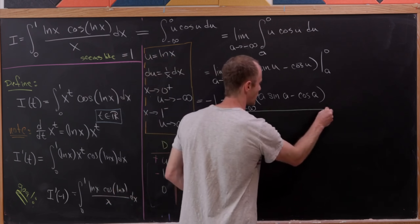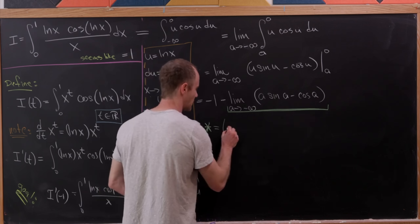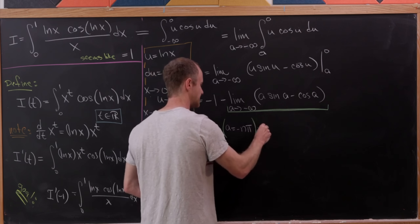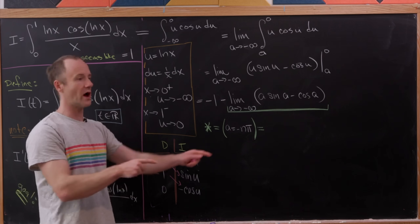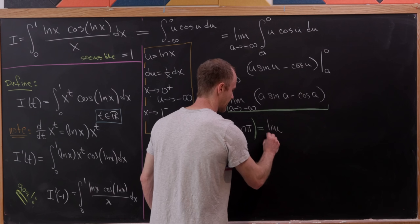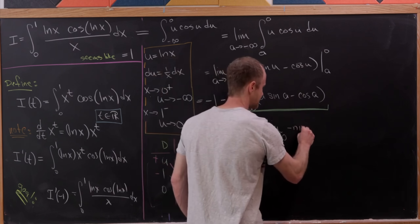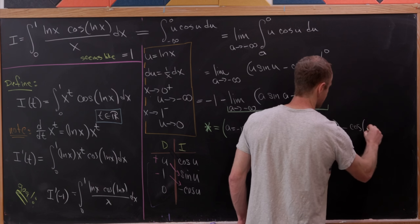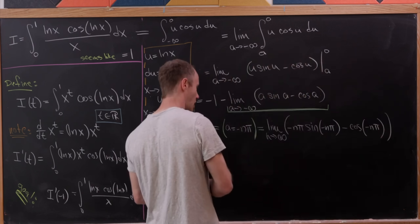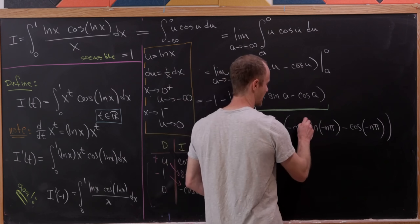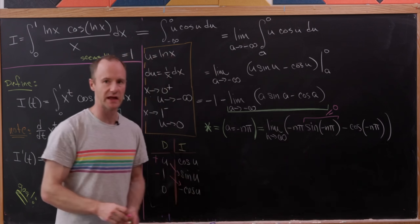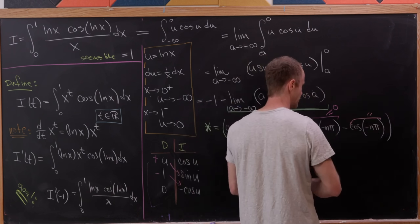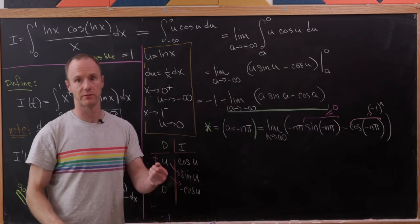Let's take this limit along the path a equals minus n times pi. As n approaches infinity, a approaches minus infinity. Along this path, the limit becomes the limit as n goes to infinity of minus n pi times sine of minus n pi minus cosine of minus n pi. The sine of integer multiples of pi is always 0, while the cosine alternates, giving minus 1 to the n. Since that continuously alternates, this limit does not exist.